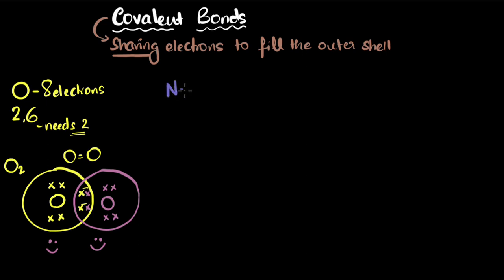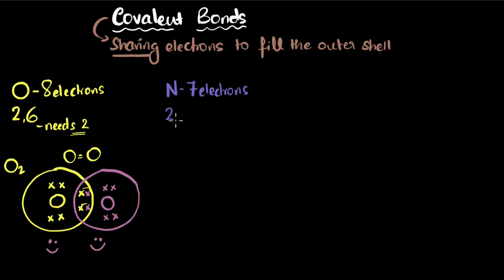Let's take another example: nitrogen, which has an atomic number of seven. Why don't you pause the video and see if you can draw the dot structure of its covalent bond yourself? If nitrogen has atomic number seven, it has seven electrons. Its electronic configuration is two in the inner shell and five in the second shell, which means it needs three more electrons to complete its outer shell. Since it needs three, it is going to share three.